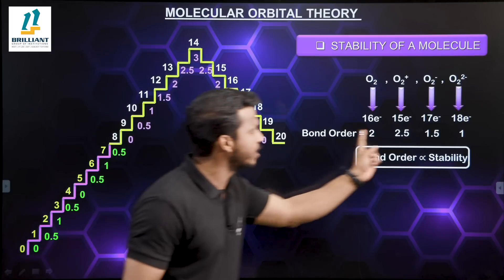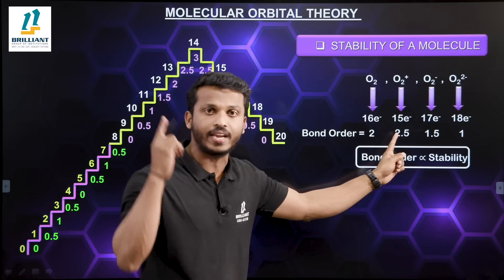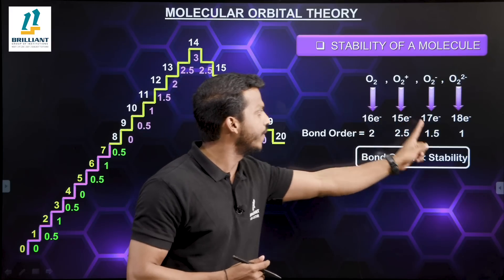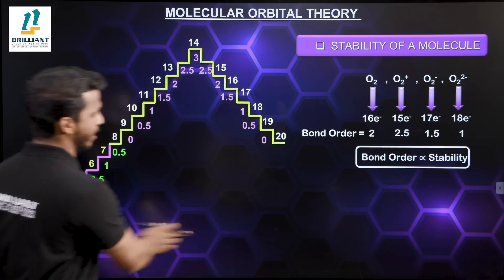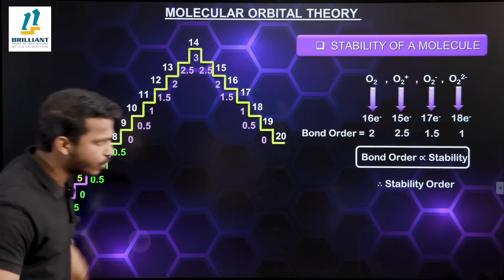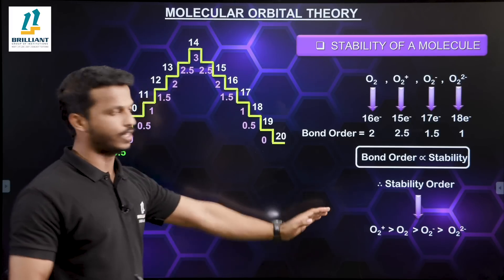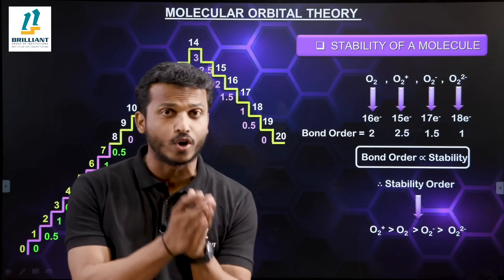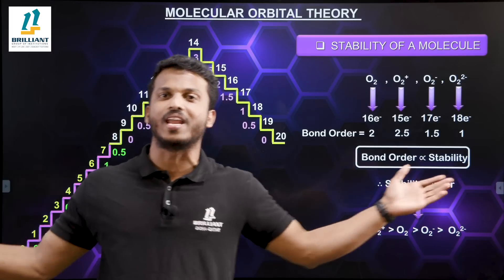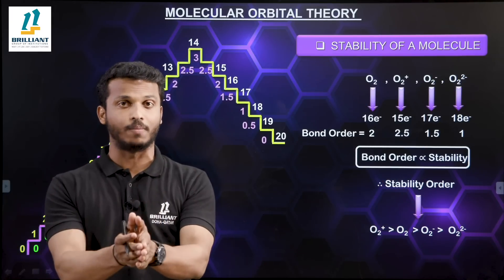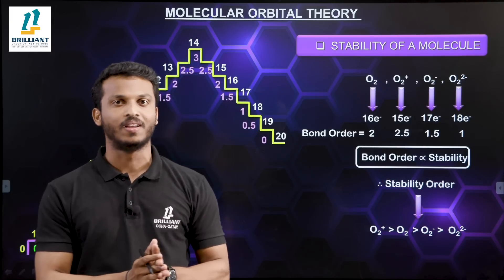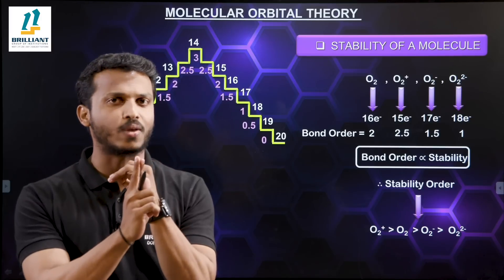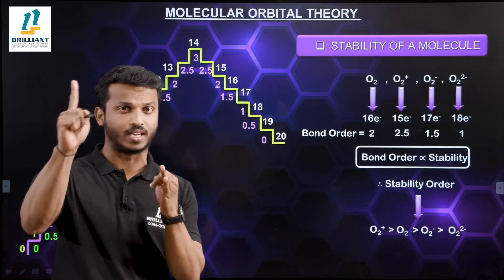So the most stable molecule is the one with the highest bond order: O2+ (bond order 2.5), followed by O2 (2), then O2- (1.5), then O2 2- (1). That gives the stability order: O2+ > O2 > O2- > O2 2-. By using this pyramid, it is very easy to determine bond order and then rank molecules by stability.